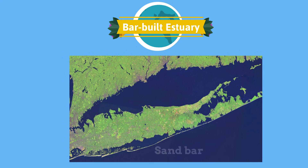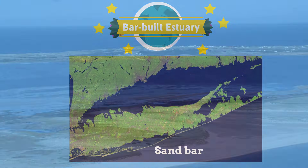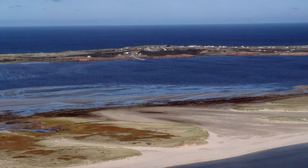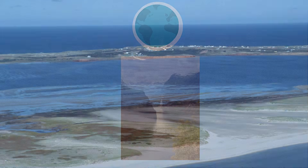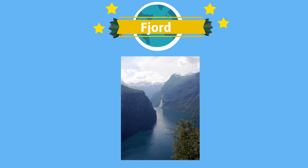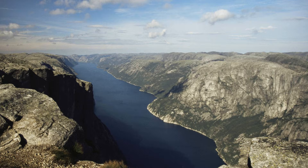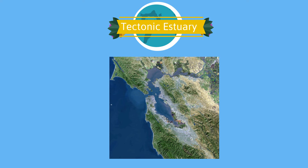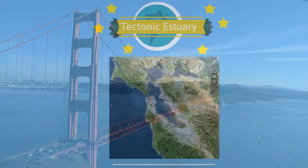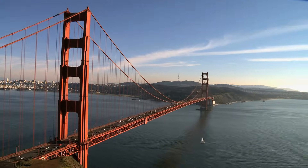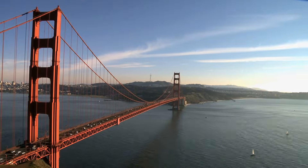Bar-built estuaries are formed when sandbars build up along the coastline and they partially cut off the waters behind them from the sea. Fjord estuaries are narrow and steep and are usually straight and long. They are found in areas that have been covered by glaciers. And finally, tectonic estuaries are created when the sea fills in a hole or basin that is formed from sinking land. San Francisco Bay is a good example.